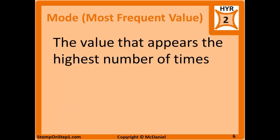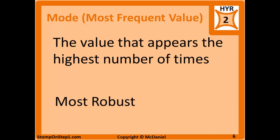The last measure of central tendency is mode, which can just be thought of as the most frequent value. It's the value that appears the highest number of times in the data set, and it is the most robust of the three.